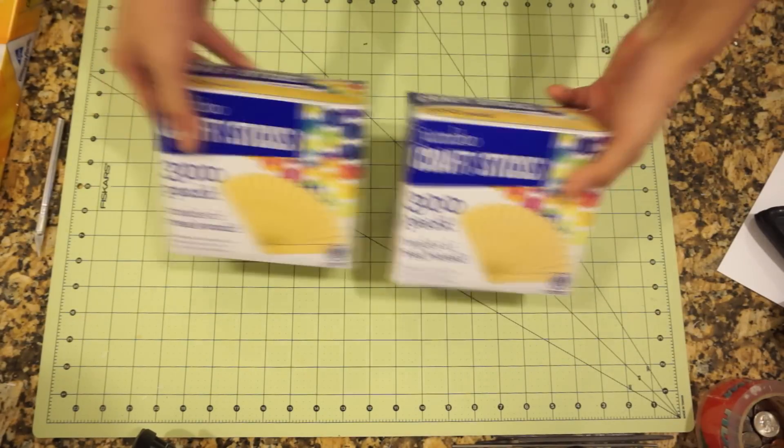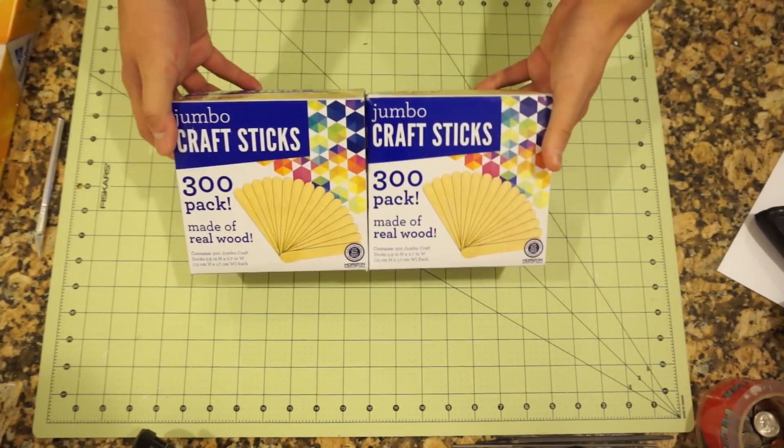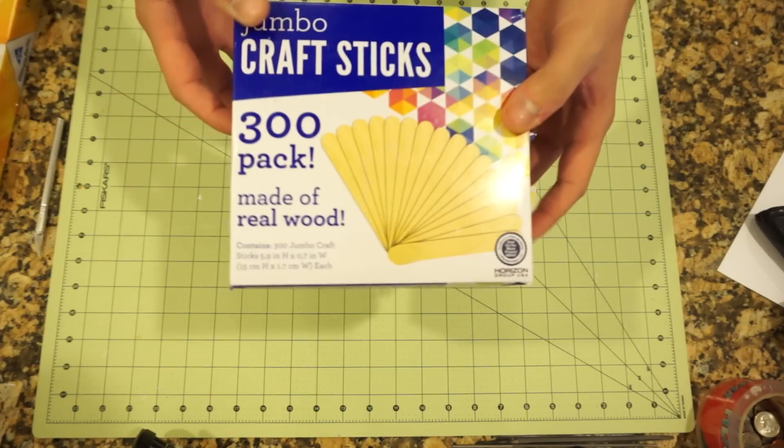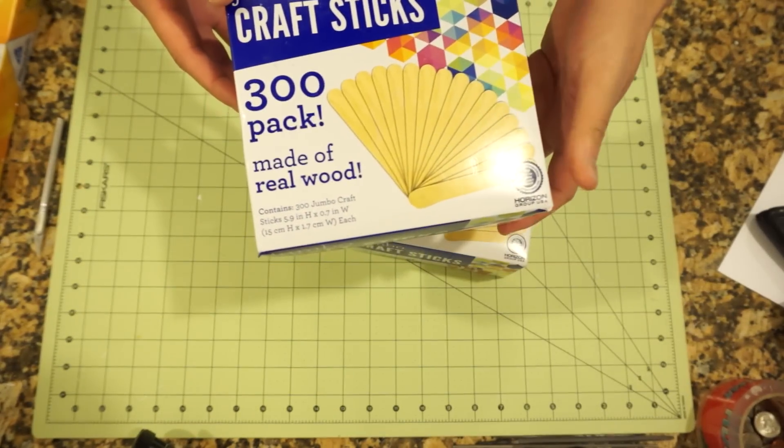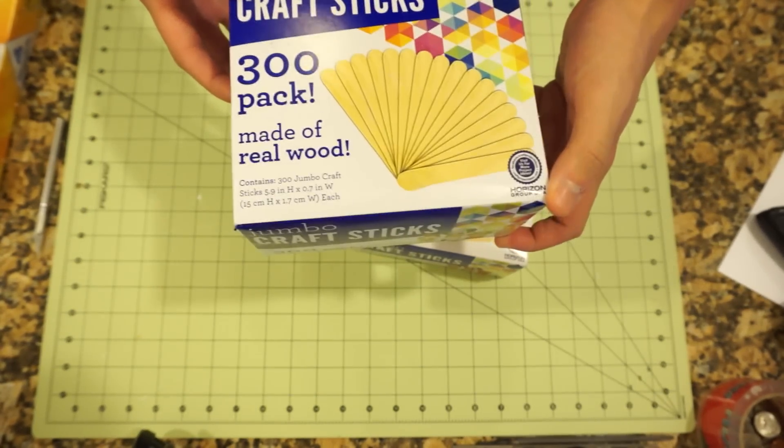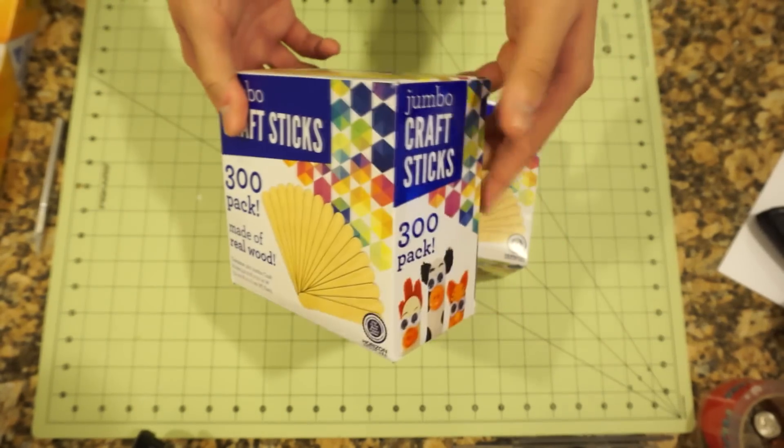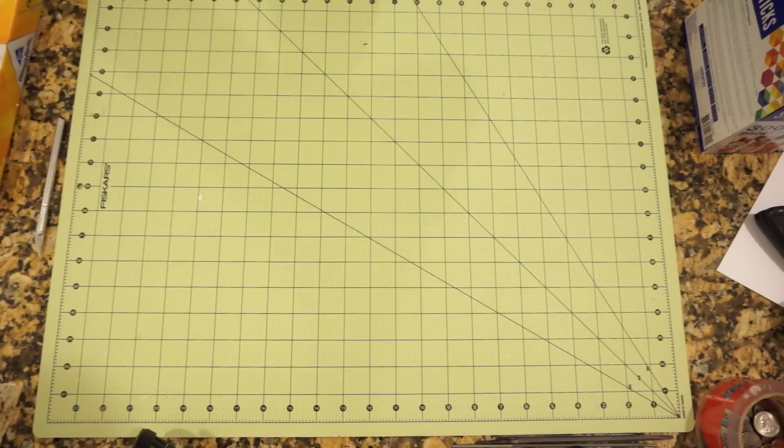Alright. So next thing we have, craft sticks. Now, these are the largest size my Walmart carries. These are the jumbo size craft sticks. More specifically, they measure 15 centimeters high by 1.7 centimeters wide. So anywhere around that dimension will do.